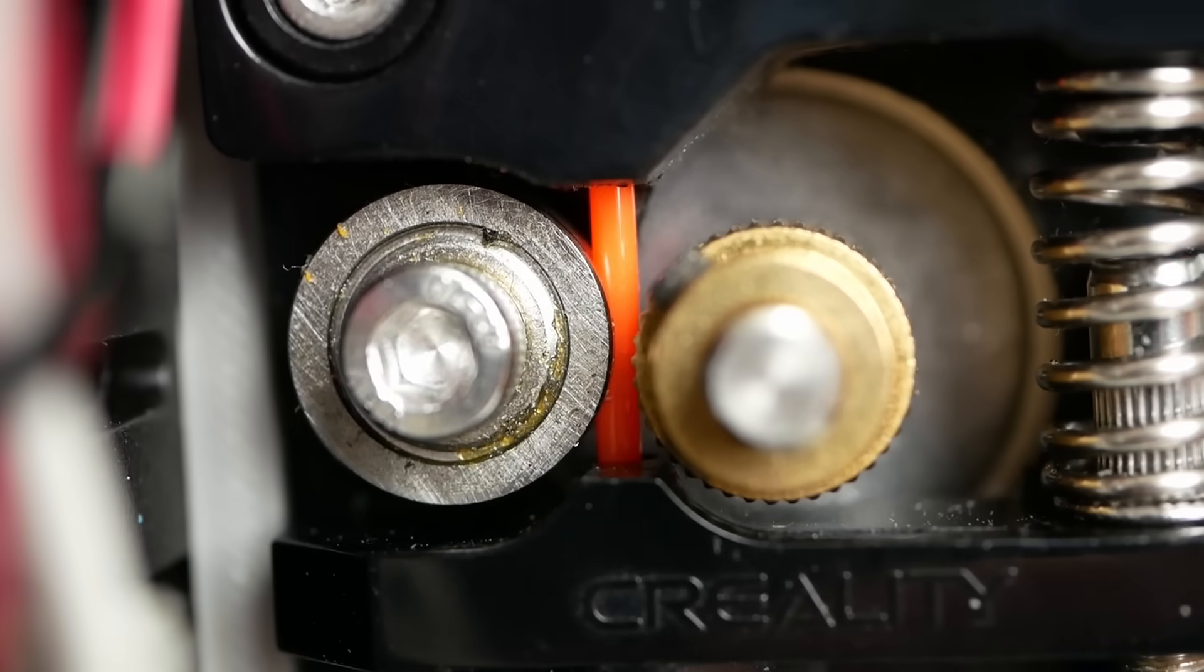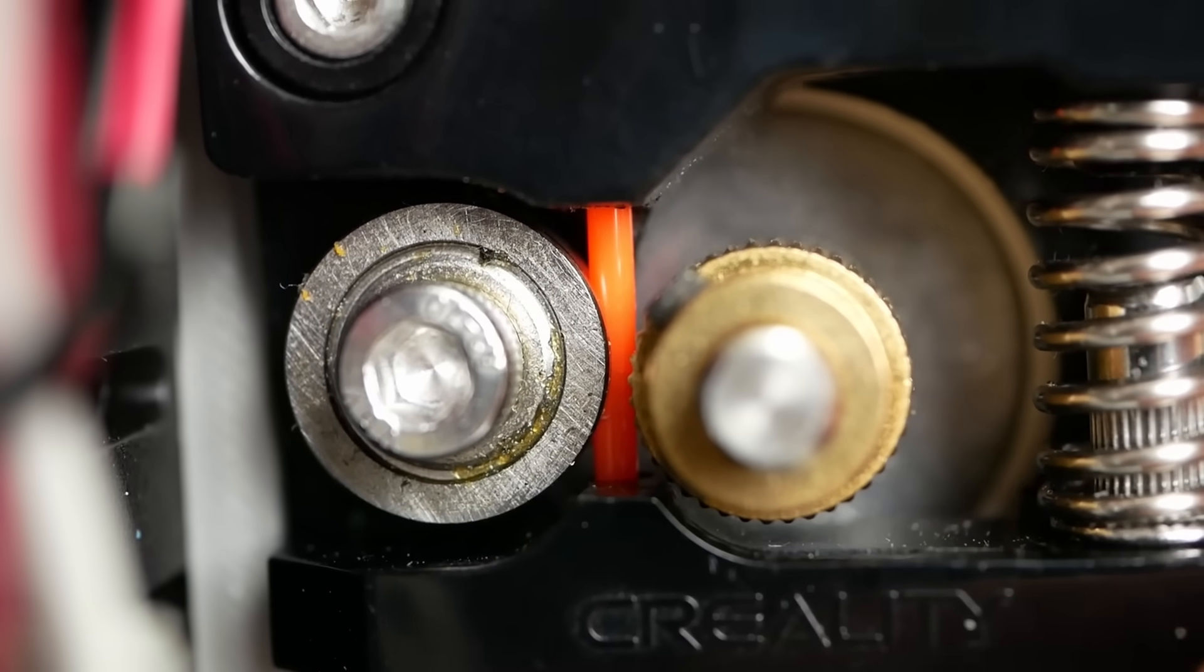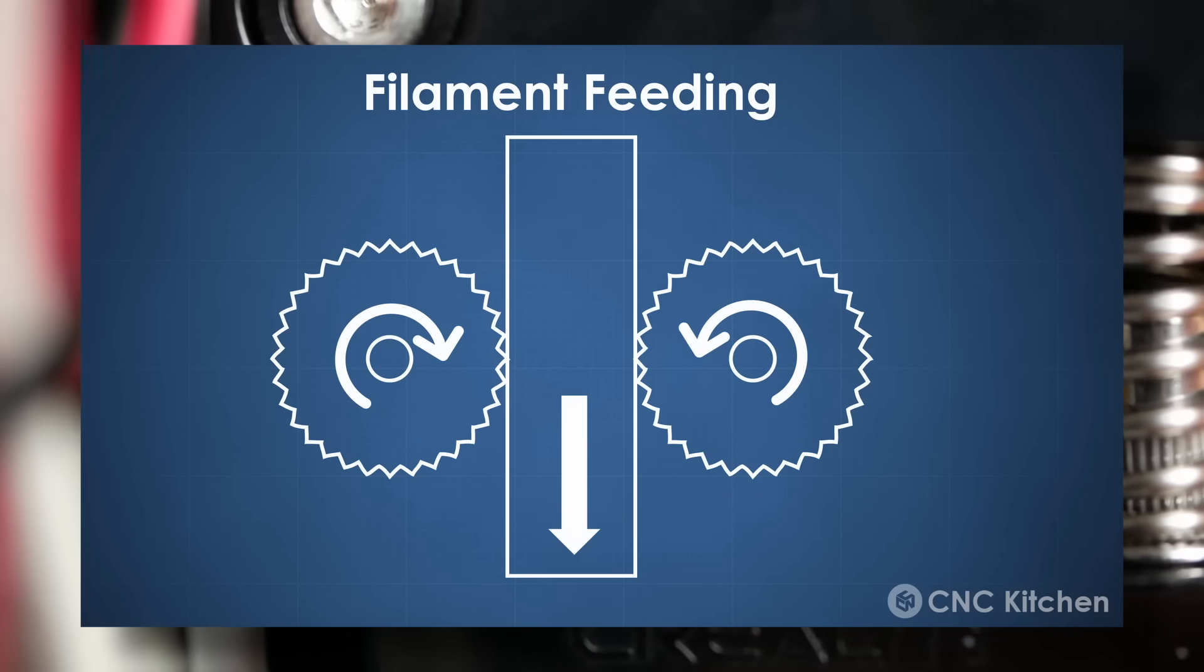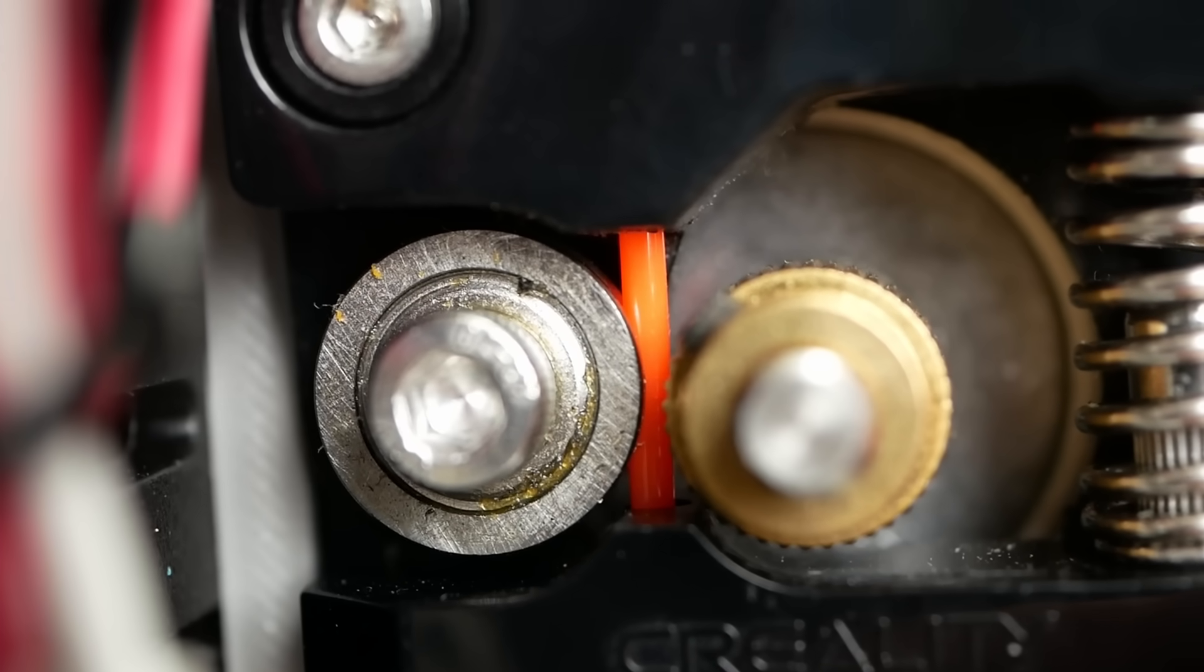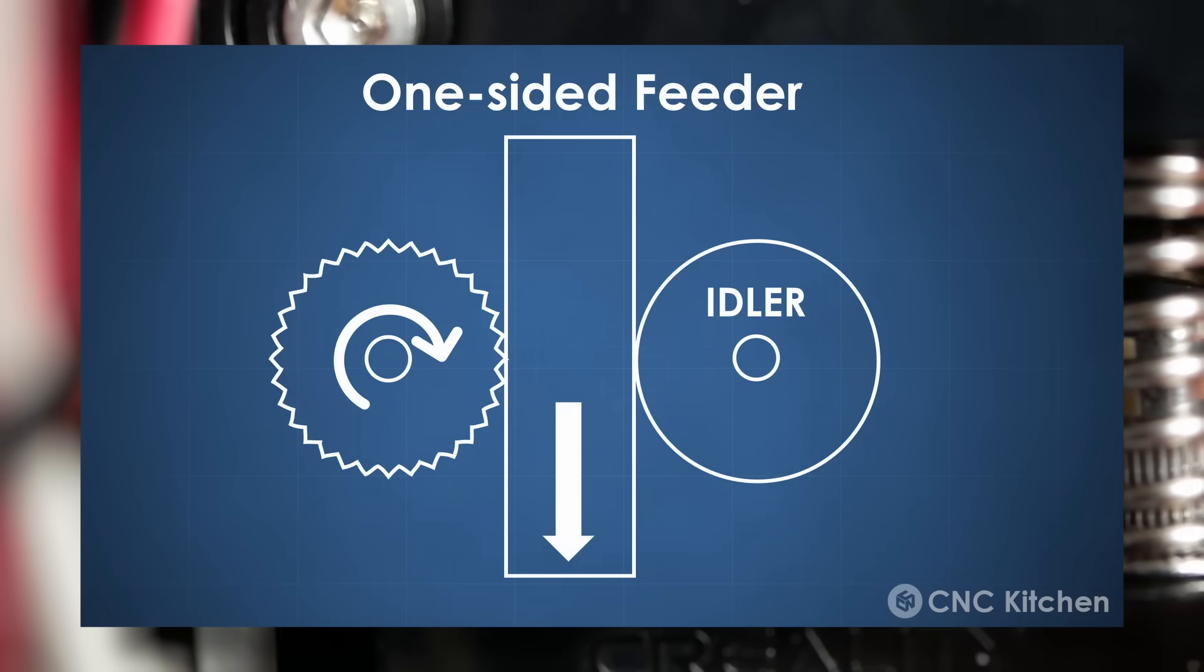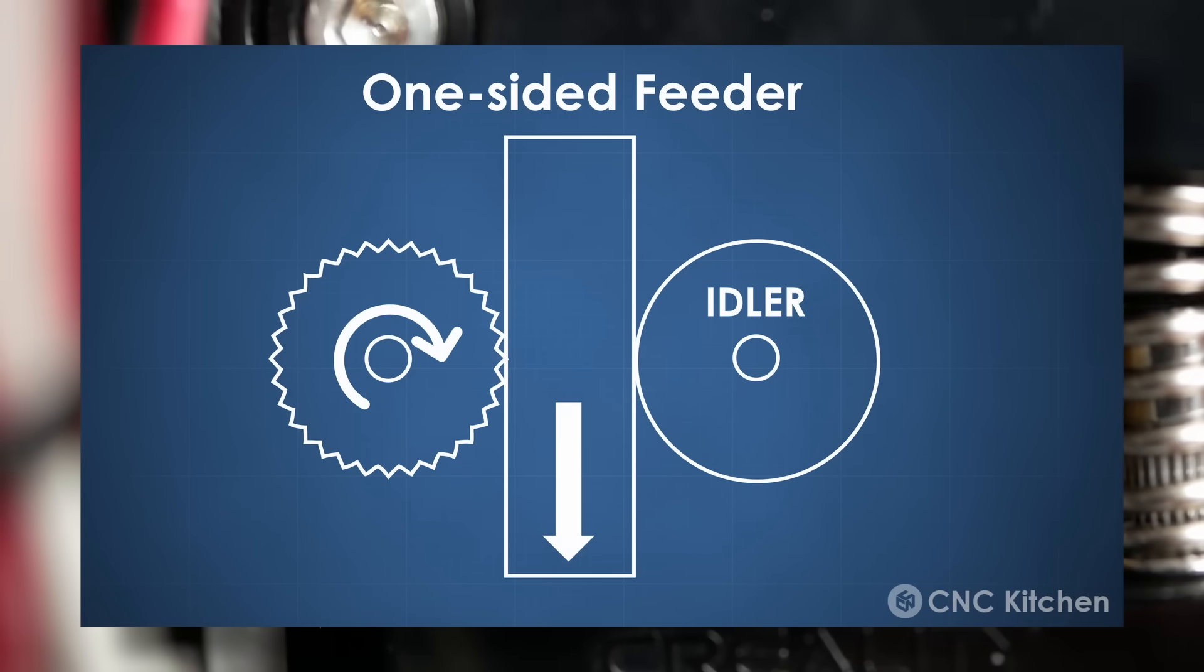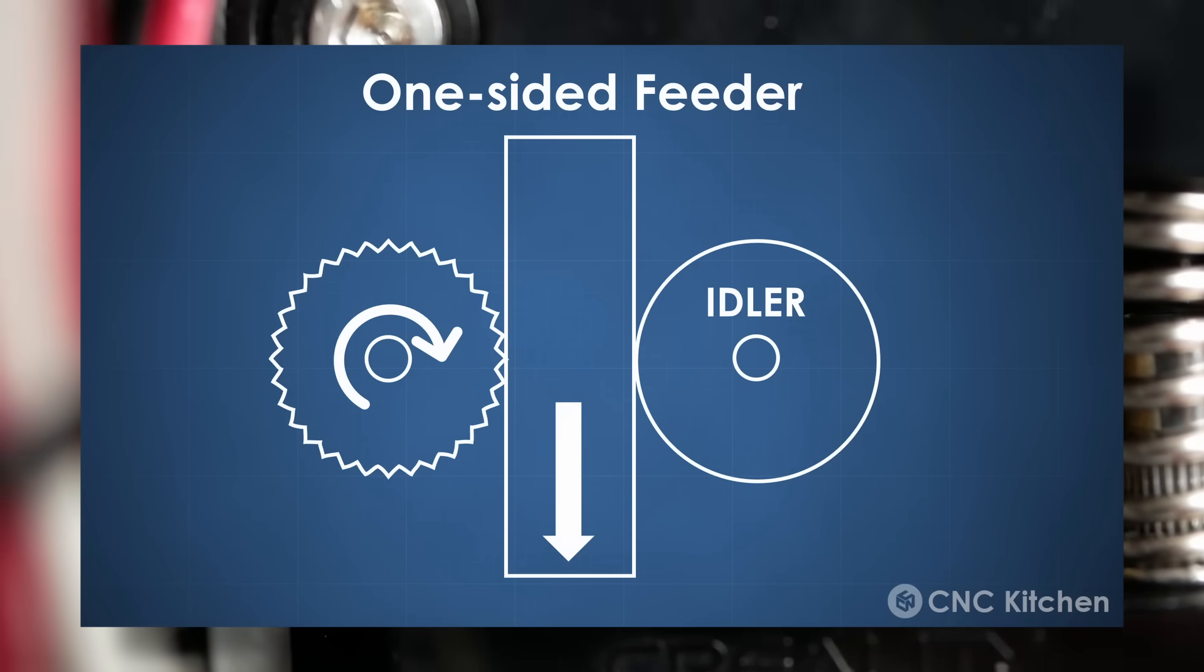On most filament-based 3D printers, the material gets pushed into the hot nozzle by a set of gears that grip the material and push it forward. There are two variations, the simplest method is just having one driven gear on one side and one freely rotating idler on the other side.